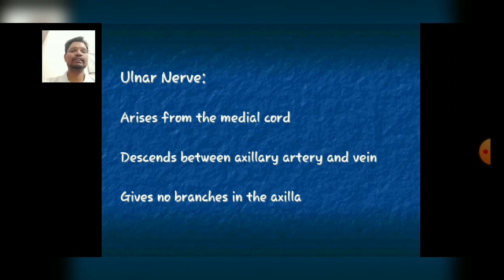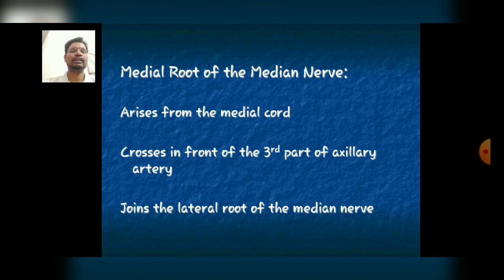The ulnar nerve is the only nerve that gives no branches in the axilla. The medial root of the median nerve arises from the medial cord, crosses in front of the third part of the axillary artery, and joins the lateral root of the median nerve.